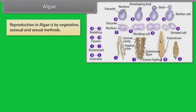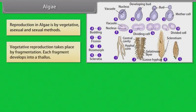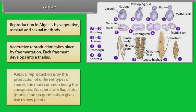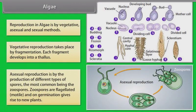Reproduction in algae is by vegetative, asexual, and sexual methods. Vegetative reproduction takes place by fragmentation. Each fragment develops into a thallus. Asexual reproduction is by the production of different types of spores. The most common being the zoospores. Zoospores are flagellated, motile, and on germination gives rise to new plants.